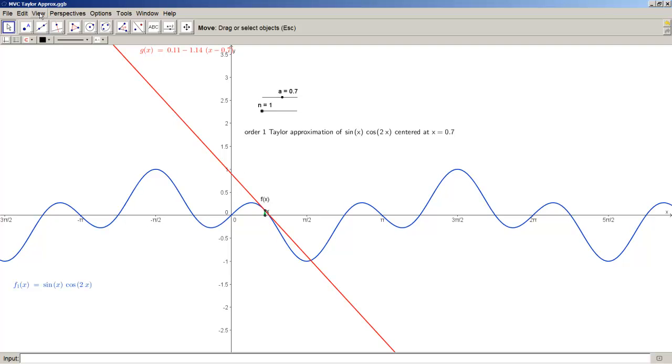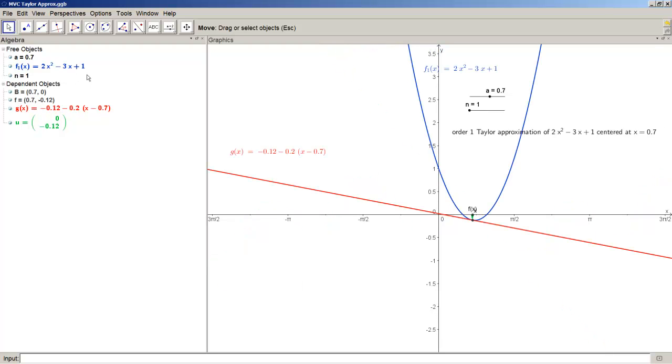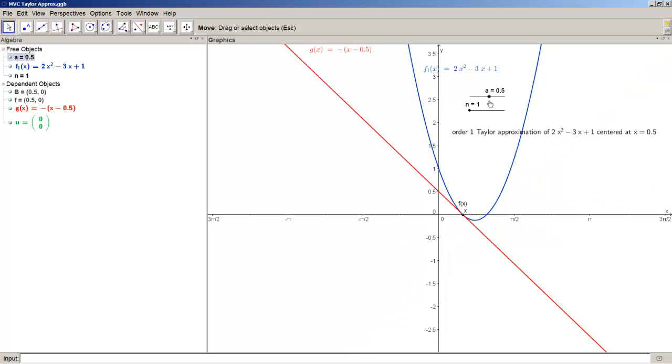Now, I can change this function around to be whatever I want. So let me go and make this a quadratic equation. So I'll do like 2 times x² minus 3 times x plus 1. And I don't know, I'm just making up a quadratic. And I'll press enter. So, same kind of principle applies. The first order is just the tangent line at that point. But now,